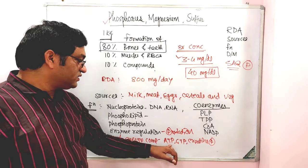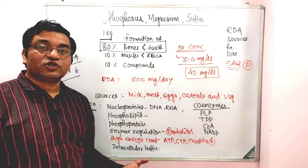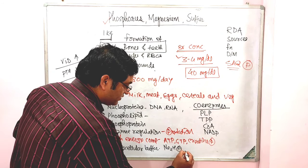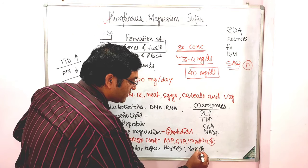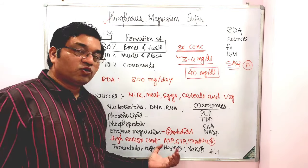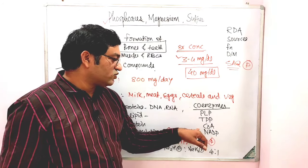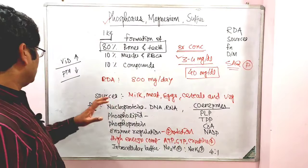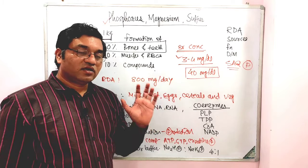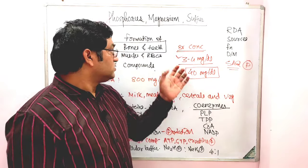Phosphorus is important for the formation of high energy compounds ATP, GTP, and creatine phosphate. It acts as a major intracellular buffer — disodium hydrogen phosphate and sodium dihydrogen phosphate are present in a ratio of 4:1 at pH 7.4, making it a potent intracellular buffer. It is also important in the synthesis of coenzymes such as PLP, thiamine pyrophosphate, and NADP. Calcitonin increases absorption, while parathyroid hormone and calcitonin also regulate serum phosphorus level.